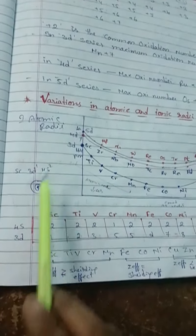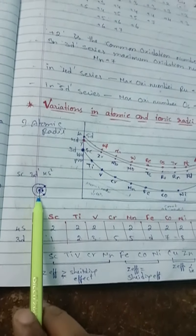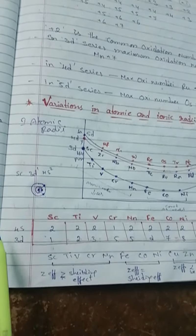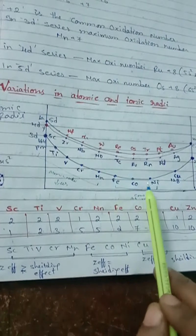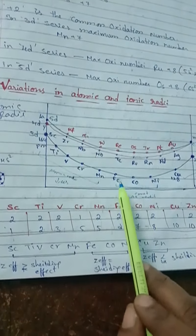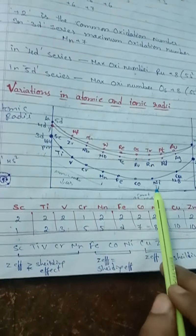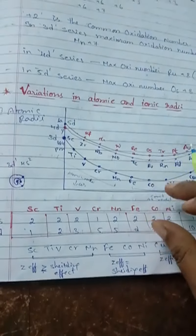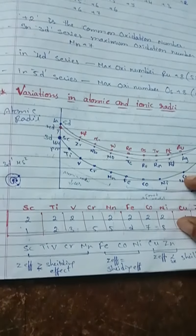Atomic radius decreases from scandium to manganese because nuclear charge is greater than the shielding effect. When we move from iron to nickel, the nuclear charge is almost equal to the shielding effect.